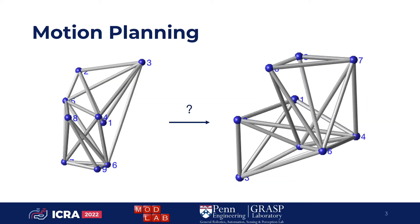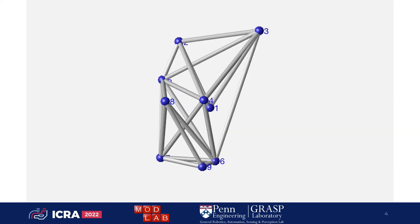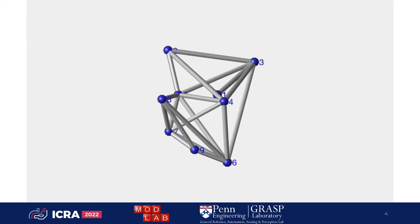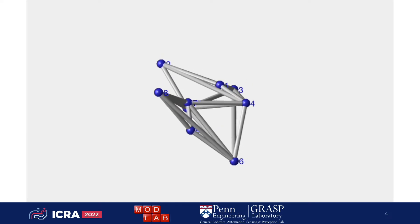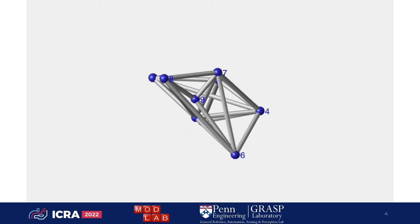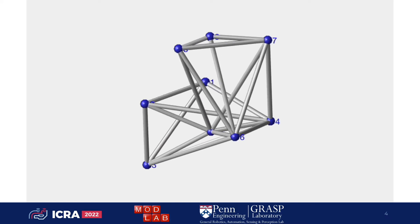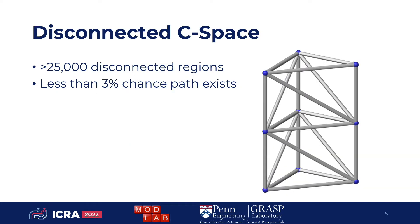Truss robots can morph into different shapes, but they have complicated collision constraints that can make it quite difficult to generate collision-free motion plans. With these two configurations, for example, I happen to know that a path exists between them, so I can run a standard sampling-based planner, and I might find a path like this. But in general, it's very unlikely that I would pick two points that have this property, because the configuration spaces of these types of robots tend to be highly disconnected.